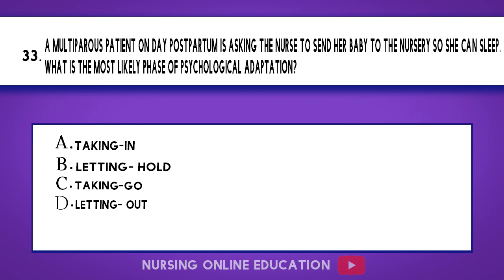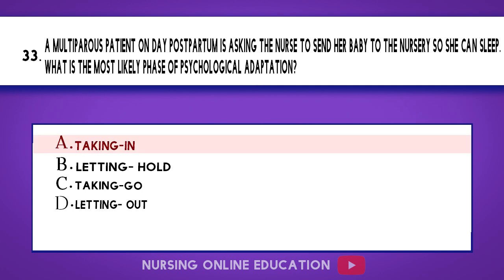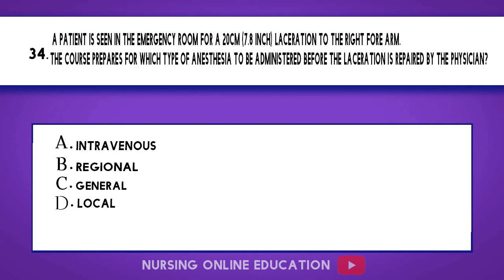Question 33. A multiparous patient on day one postpartum is asking the nurse to send her baby to the nursery so she can sleep. What is the most likely phase of psychological adaptation? A. Taking in. B. Letting hold. C. Taking go. D. Letting out. The answer is option A: Taking in.